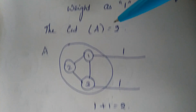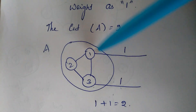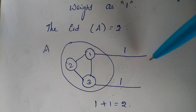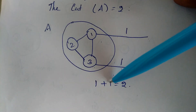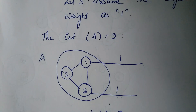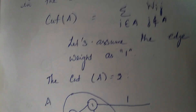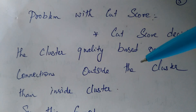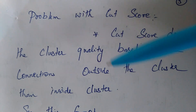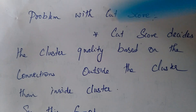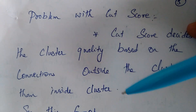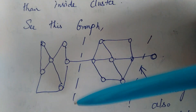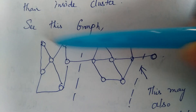Assuming edge weight is 1, the cut of A is 2 because there are two edges that have one node in cluster A and the other node in some other cluster. By measuring cuts we can assess cluster quality, but the problem with the cut metric is that it may give misleading interpretations. It only measures how well the graph is connected outward and does not consider the density of connections within the cluster.